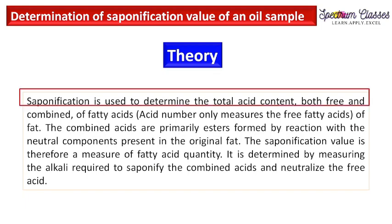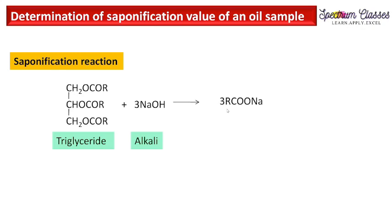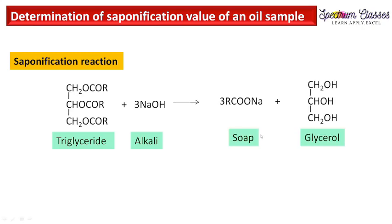Let me explain this with the help of equations. What is called saponification? The combined acids are called triglycerides, also known as combined fatty acids. In saponification, the reaction of these triglycerides with alkali results in the formation of soap and glycerol. I have discussed this in my previous video on soap formation. Through this reaction we can determine how much alkali is required to break down these triglycerides or combined acids.